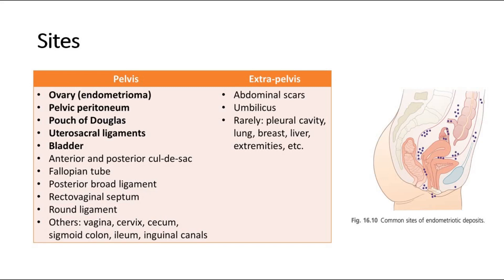These are some of the possible sites of endometriosis, which can be divided into pelvic area and extra-pelvic area. Within the pelvis, the endometrial tissue can be found in the ovary, which we also call endometrioma, in the pelvic peritoneum, pouch of Douglas, utero-sacral ligaments, bladder, and so on.